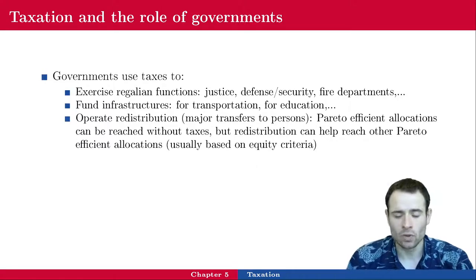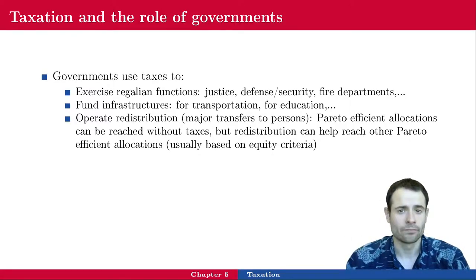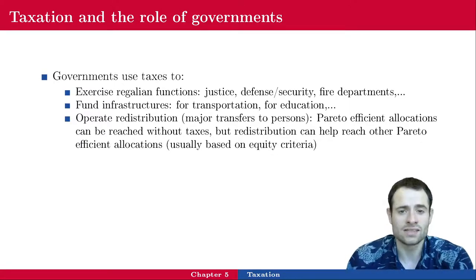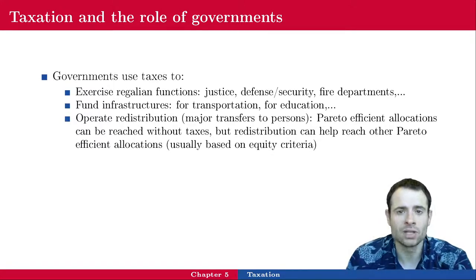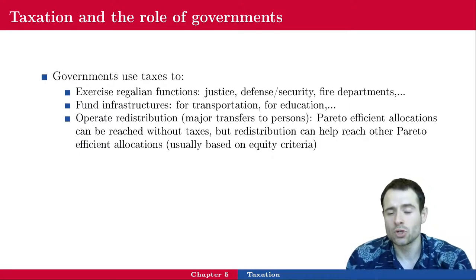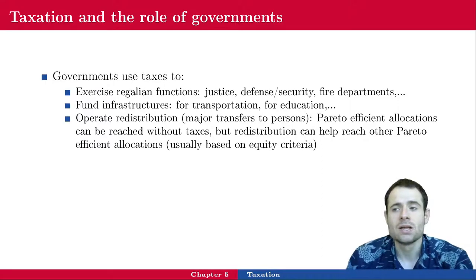Imagine a Pareto efficient allocation where one person in the country owns everything and nobody else owns anything. That would be one allocation. Another Pareto efficient allocation could be where all resources are used and the income distribution is rather equal — not necessarily exactly equal, but people roughly have the same amount of resources. Governments might prefer the second allocation over the first because it is more fair. Redistribution can help reach a Pareto efficient allocation that is less unequal.